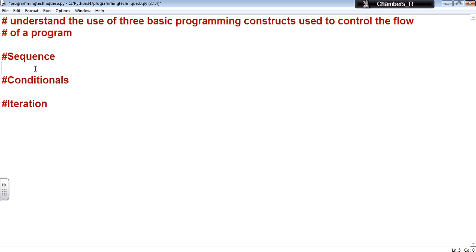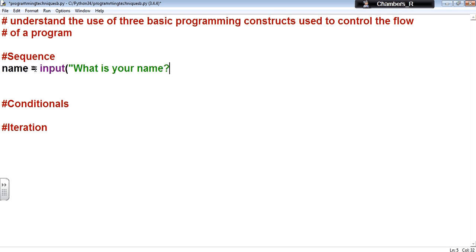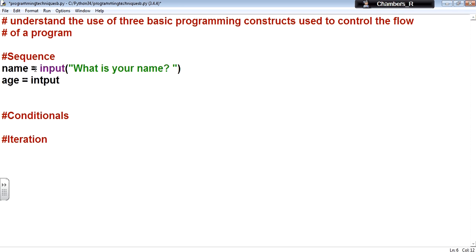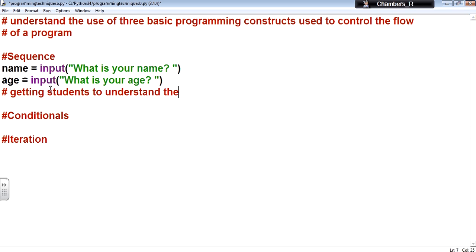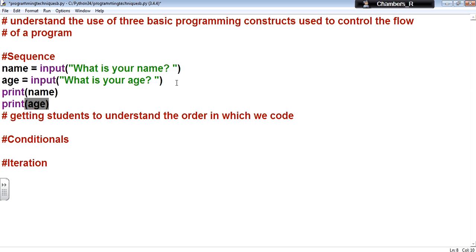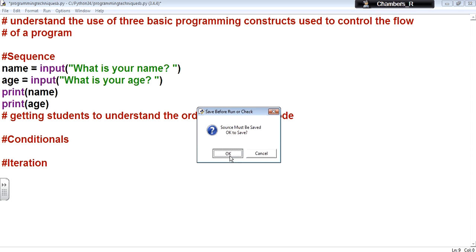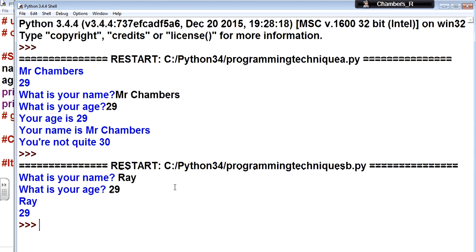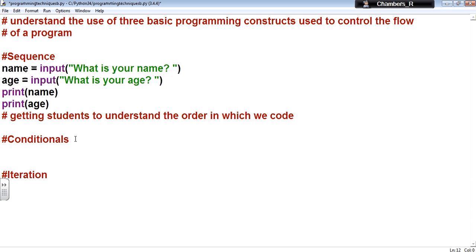This tutorial will talk briefly about how to understand and use the three basic programming constructs used to control the flow of a program. Sequence is basically the order in which you run your program. So if I have 'name equals input what is your name' and 'age equals input what is your age', it's getting students to understand the order in which we code.